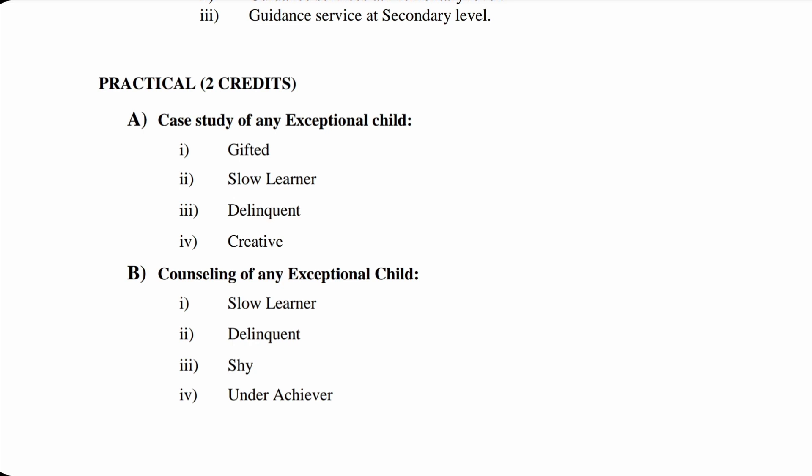Practical, 2 credits. A: Case Study of Any Exceptional Child — Number 1: Gifted, Number 2: Slow Learner, Number 3: Delinquent, Number 4: Creative. B: Counseling of Any Exceptional Child — Number 1: Slow Learner, Number 2: Delinquent, Number 3: Shy, Number 4: Underachiever.